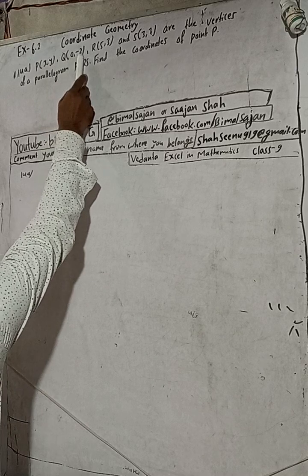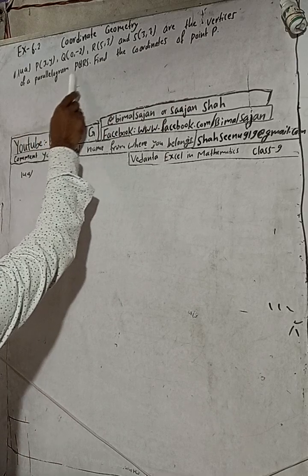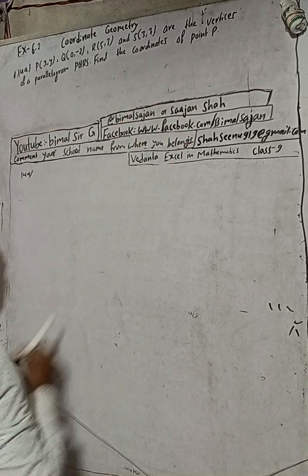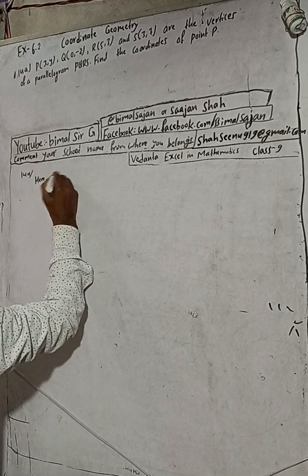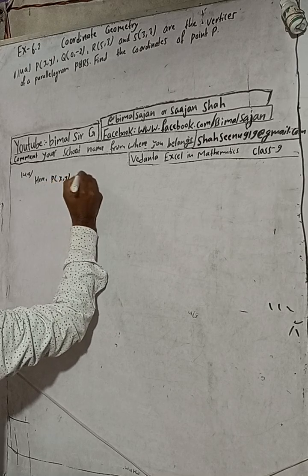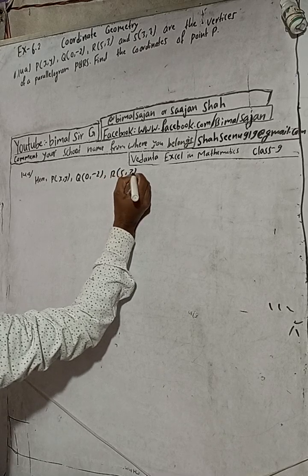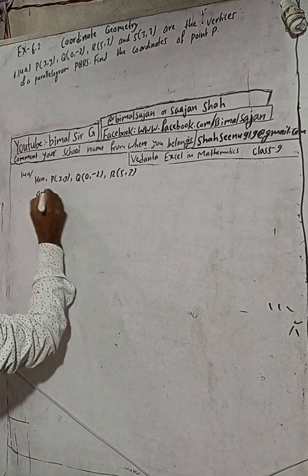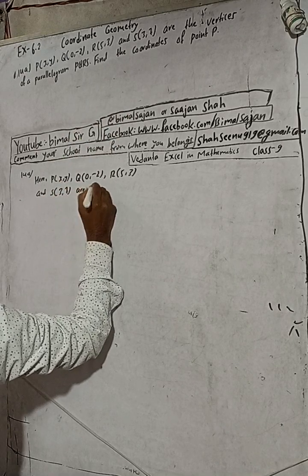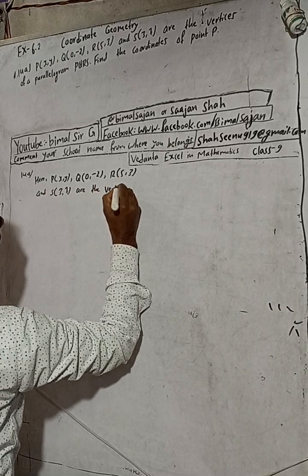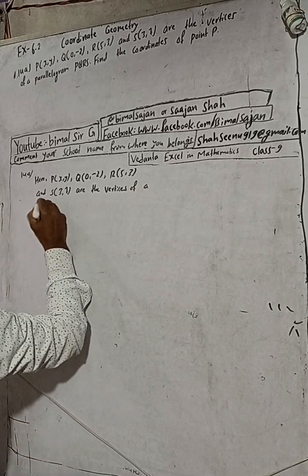Here the question is: P(x,y), Q(0,-2), R(5,3), and S(3,7) are the vertices of a parallelogram PQRS. Find the coordinates of point P. So given here P(x,y), Q(0,-2), R(5,3), and S(3,7).